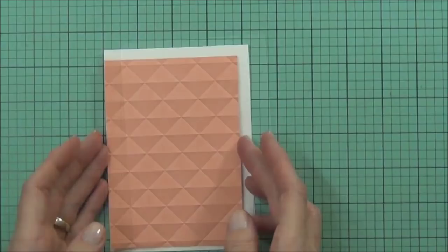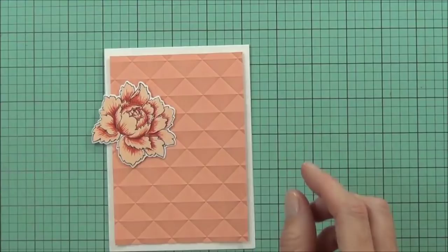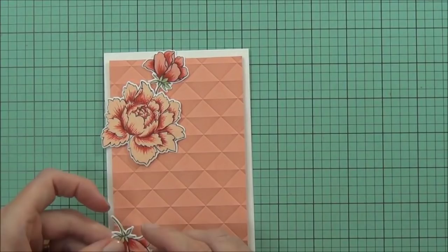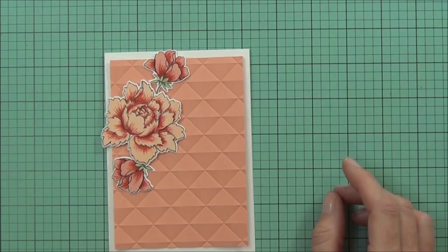I've run it through an embossing folder, the Next Level Geometric from We R Memory Keepers. I've got the flowers that I stamped in my previous video, so I'll link that here or below. It was a video showing how to stamp out this peony bouquet set.